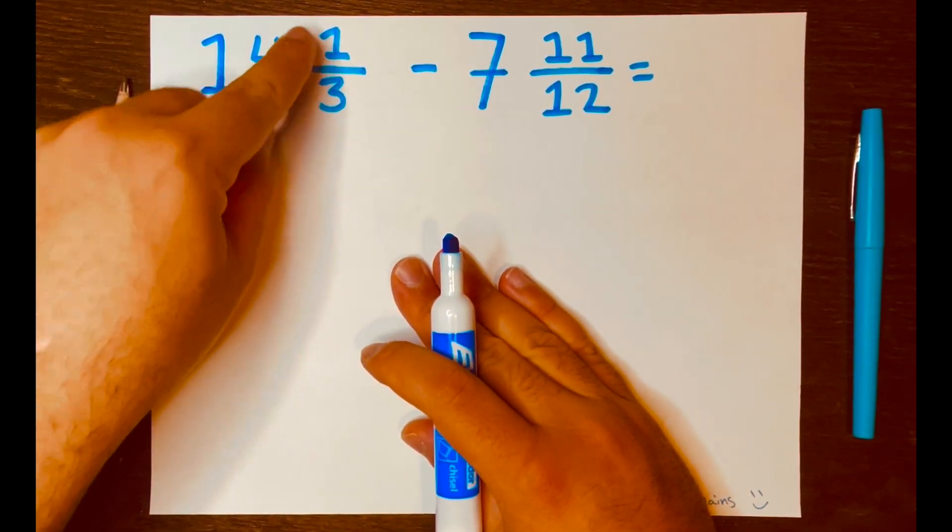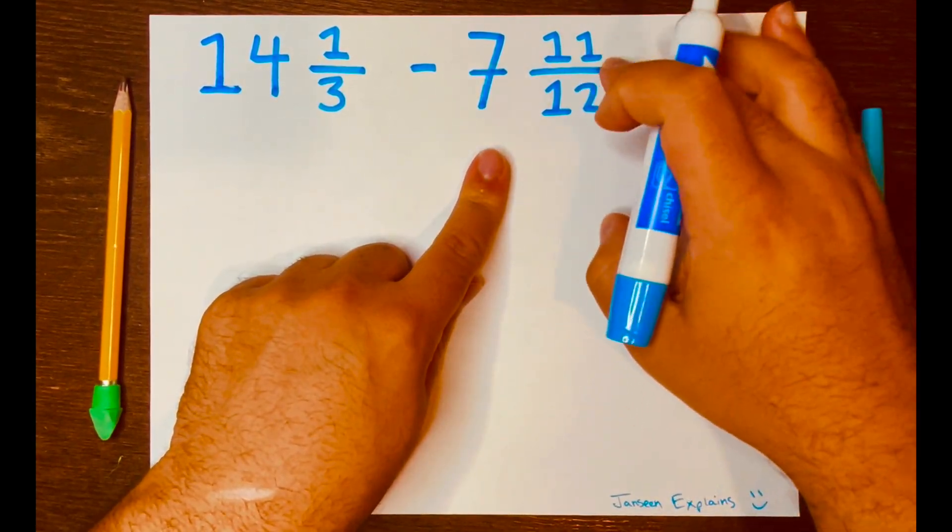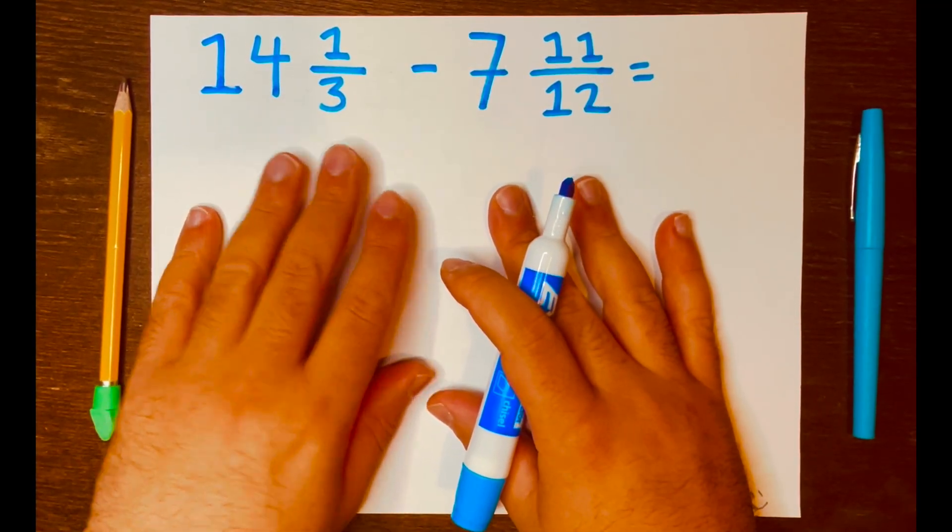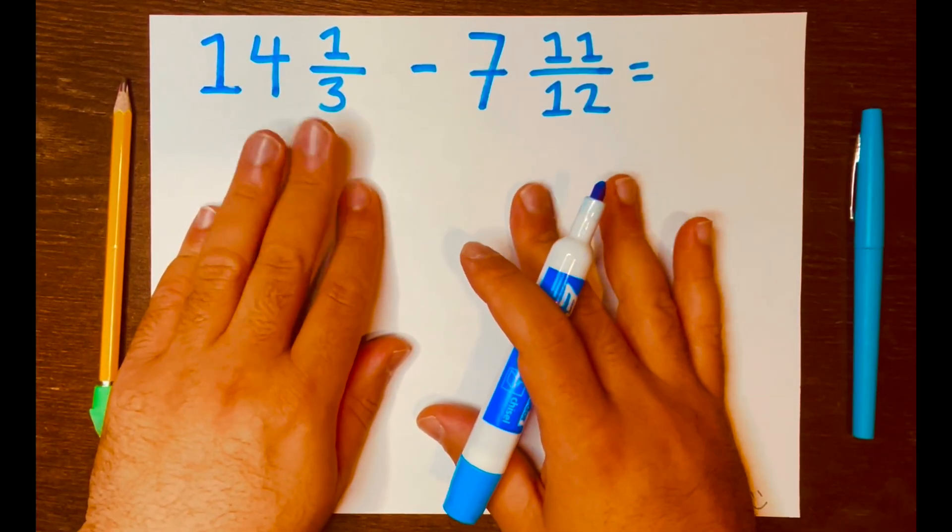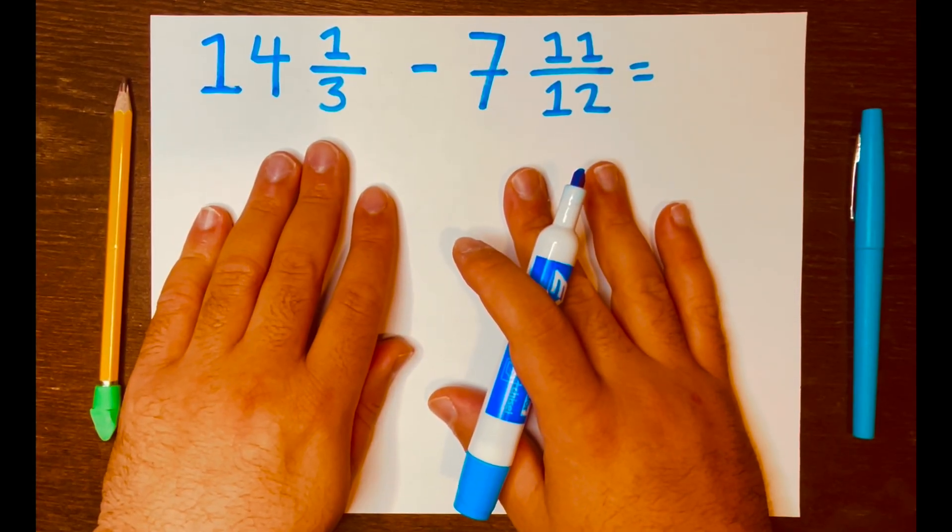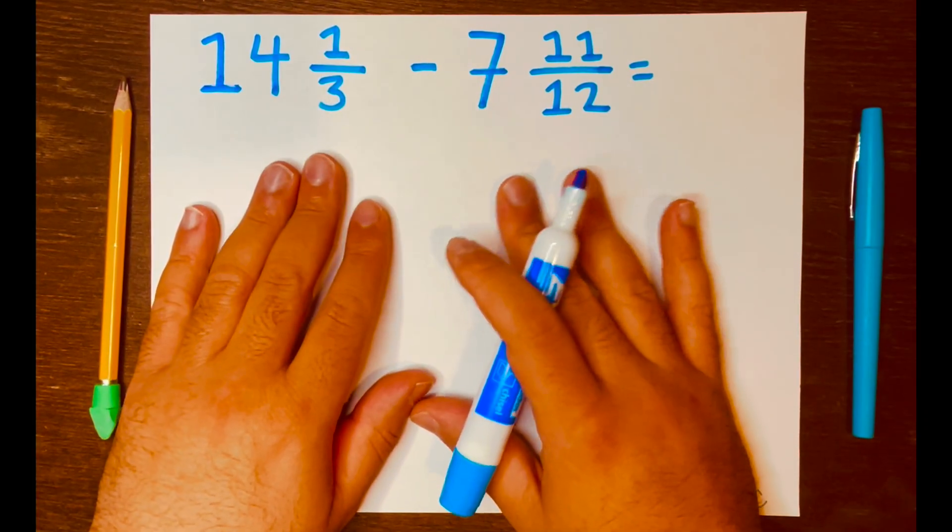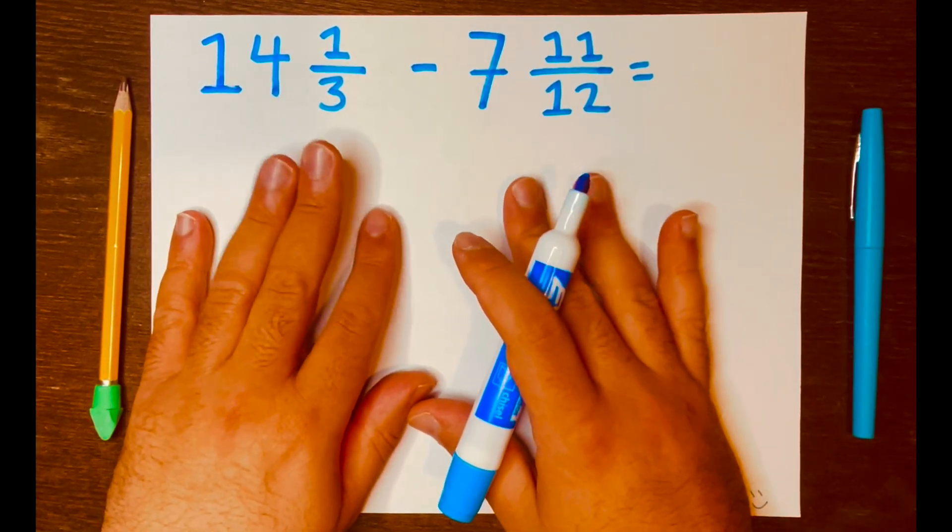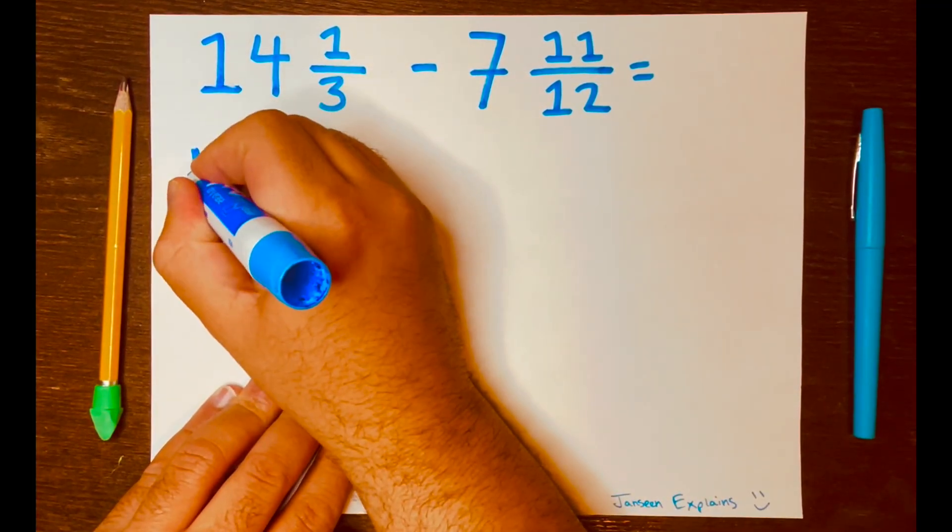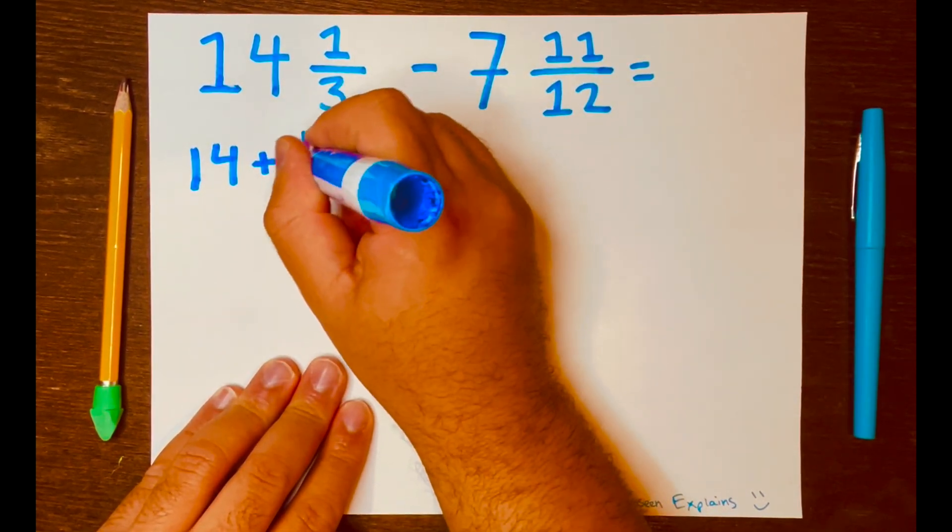We have 14, 1 over 3, minus 7, 11 over 12. So we are subtracting mixed numbers. We are not going to turn these mixed numbers into improper fractions because that will take a lot of math and a lot of multiplication with big numbers and all. So we're not going to do that. We're going to expand these mixed numbers and put them in parentheses around them like this.